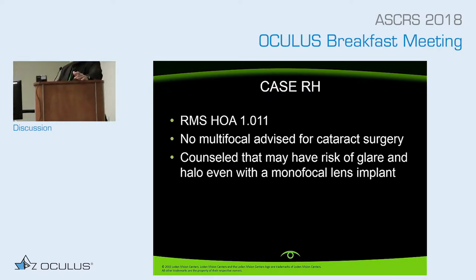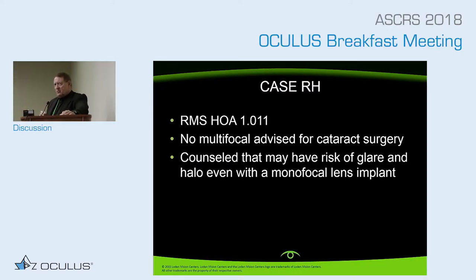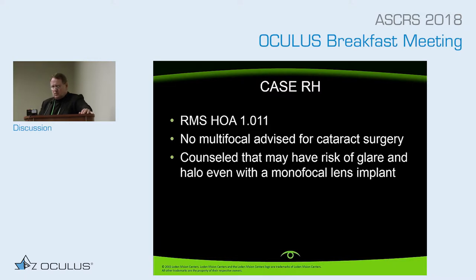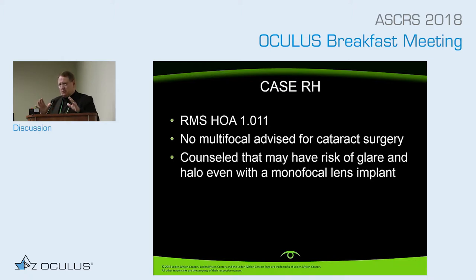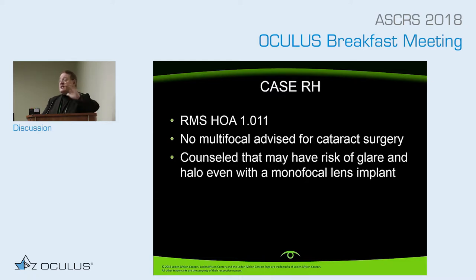To summarize: the RMS HOA wavefront error is not widely known. There's a study by McMillan in ophthalmology showing that patients with 1.4 microns of higher order aberrations over a six-millimeter zone of the cornea — 100% of them complained of halos and glare. If you add the reduced contrast from a multifocal lens — 30% lower contrast — on top of a halo the patient already has, your chance of failure and complaints are extremely high.